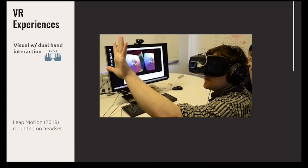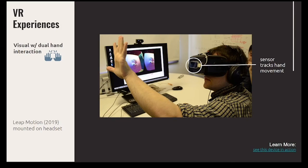The way you interact in VR is based on controllers or outside sensors. The Quest controllers are tracked by the headset; the HTC Vive has sensors you mount on your wall; the Rift has sensors you set on your table — but they're tracking the controllers, not your hands. There is possibility of tracking hands that already exists: the Leap Motion from 2019, mounted to a VR headset, tracks hand movements with no gloves and no controllers.